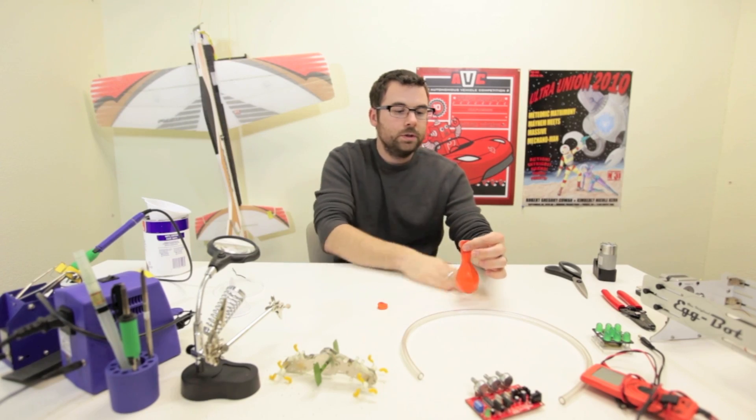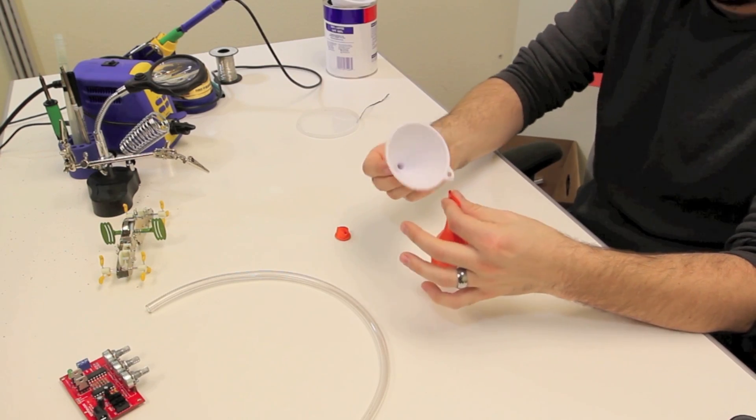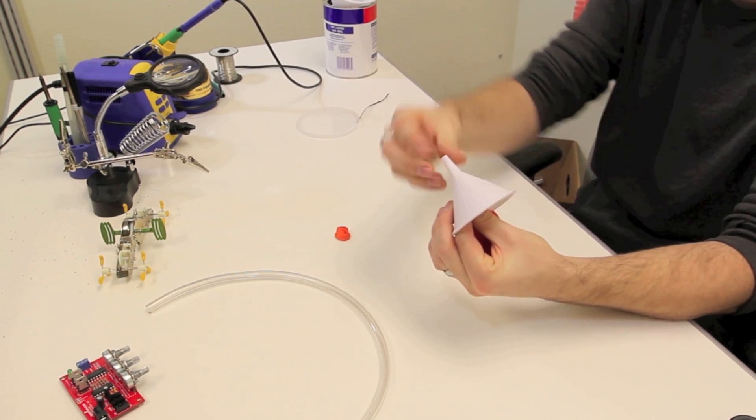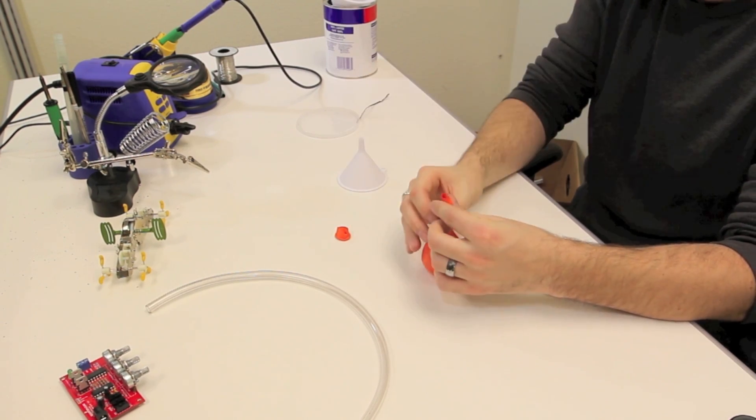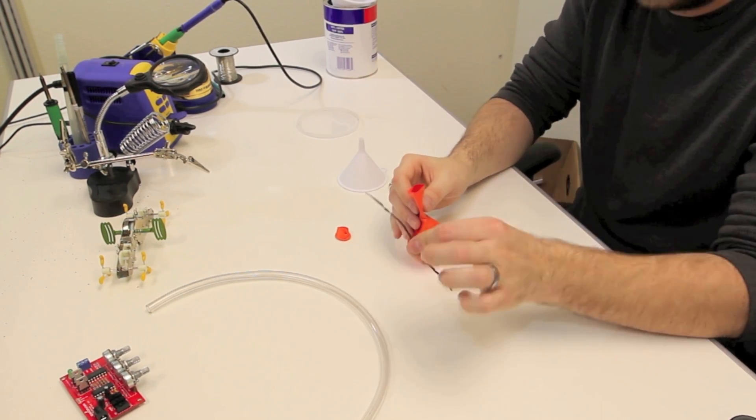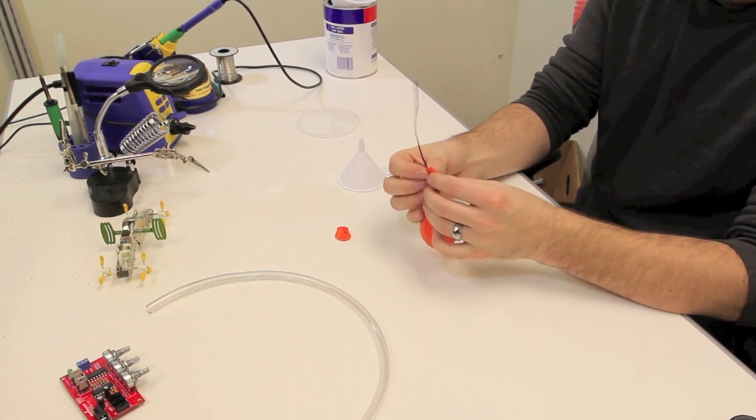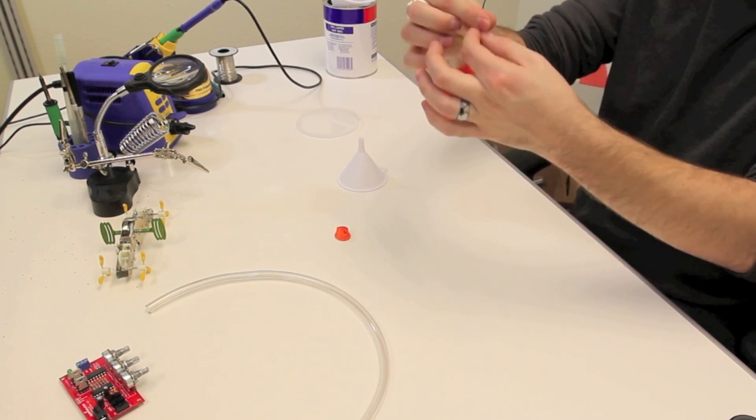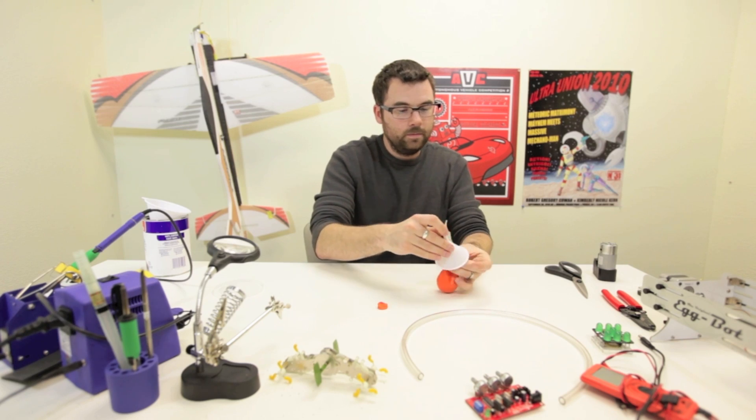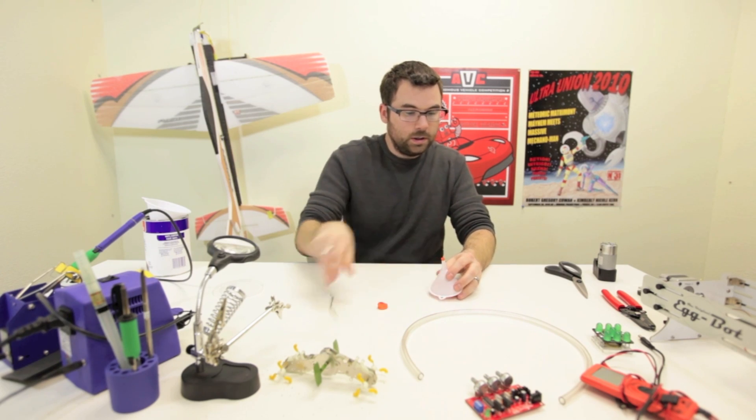Now what we need to do is we need to get this through this funnel. So we need to pull this through so we can attach it. And a little trick I did was to take a twist tie or something like a length of wire and wrap this around and tape it and pull it through. And then you can easily pull it through.